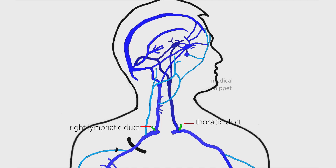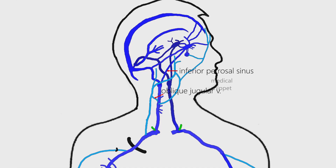Each duct opens at the junction of the subclavian and internal jugular veins. The internal jugular vein communicates with the external jugular vein via the oblique jugular vein, and also communicates with the cavernous sinus via the inferior petrosal sinus.